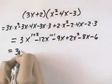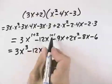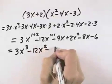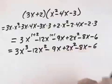So we're looking at 3x to the 1 plus 2 is the third power. Minus 12x to the 1 plus 1 is second power. Minus 9x, plus 2x squared, minus 8x, minus 6.